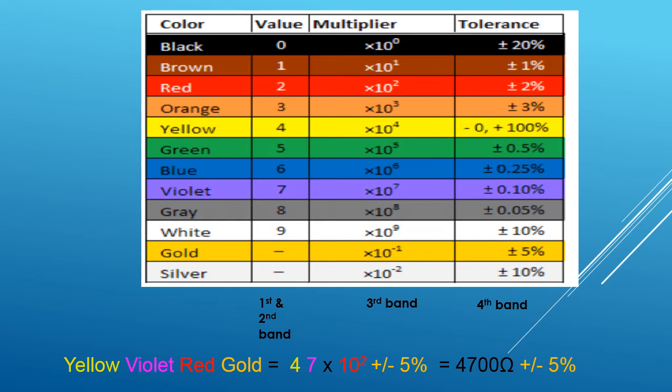To summarize: for the first and second band, use the digit value as-is from the value column. For the third band, use the multiplier and multiply the two-digit number by that multiplier value. The fourth band gives the tolerance value, indicated by a plus or minus sign expressed as a percentage. This is how to calculate a resistor value using color bands.